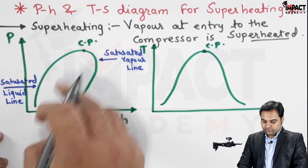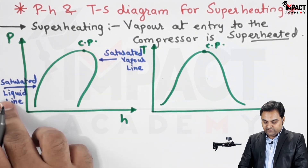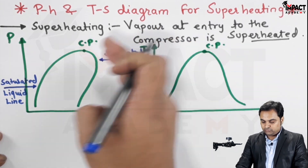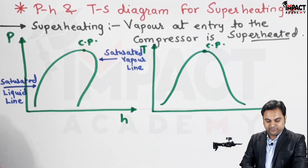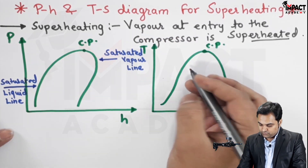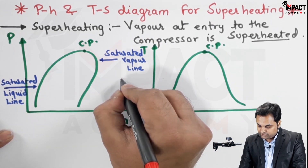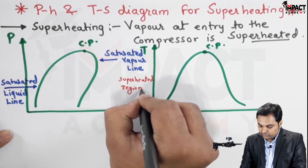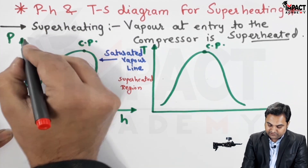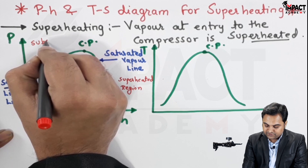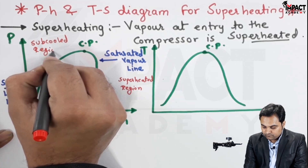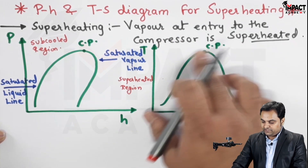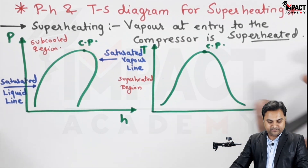On this curve, the left-hand side portion indicates the saturated liquid line and the right-hand side is the saturated vapor line. Whatever is to the right of the vapor line is the superheated region. Whatever is to the left of the saturated liquid line is the sub-cooled region, and in between is the wet region. The condition here is that the vapor at the entry to the compressor is superheated.